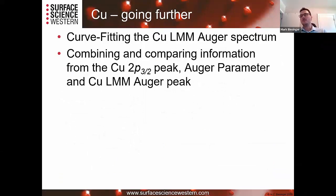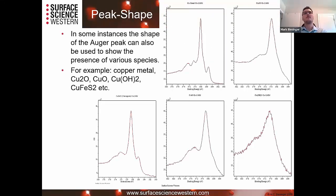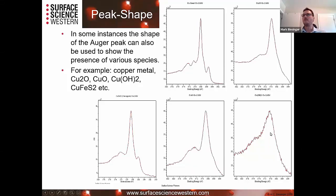We also looked further into the copper LMM Auger spectrum, using that information in combination with the 2p data and Auger parameters to get a more complete picture of copper speciation. Looking at the CuLMM Auger peak shapes, copper metal has a very distinct shape, Cu2O has another, chalcopyrite (CuFeS2) another, and CuO and Cu(OH)2 each have very different peak shapes and positions. We use these as diagnostic tools to identify what species are present.